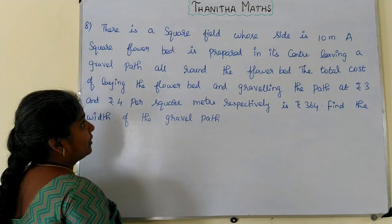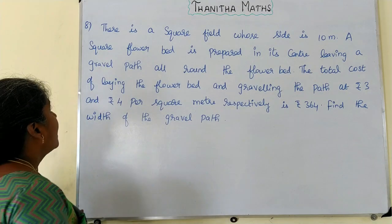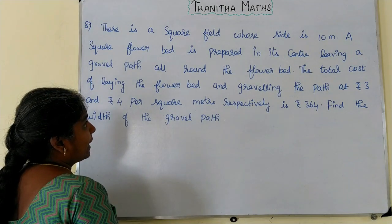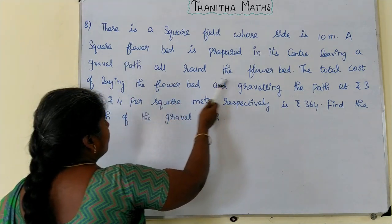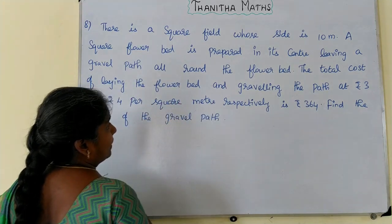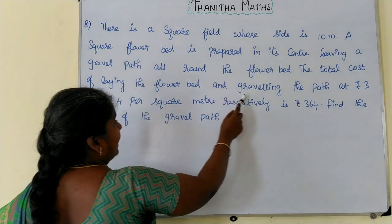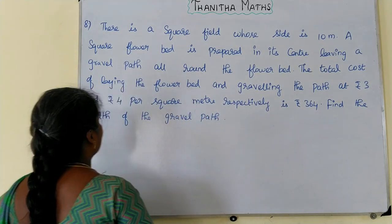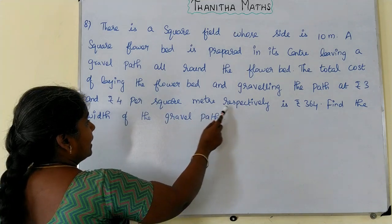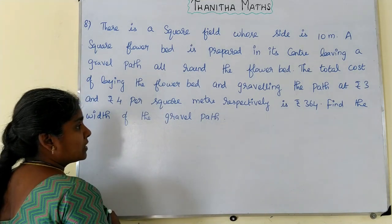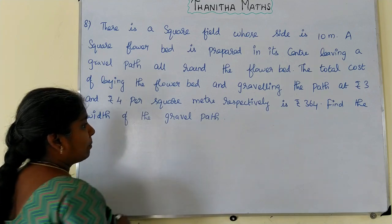A square flower bed is prepared in the centre of a field, leaving a gravel path all around. The total cost of laying the flower bed and graveling the path at rupees 3 and rupees 4 per square meter respectively is rupees 364. Find the width of the gravel path.